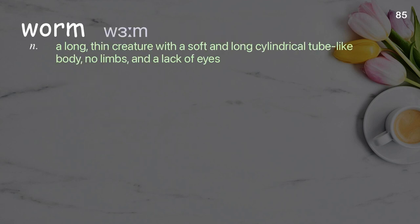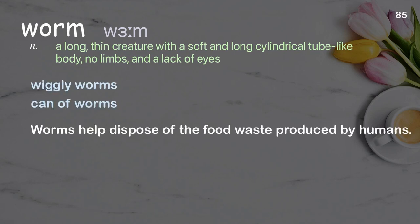Worm. A long, thin creature with a soft and long cylindrical tube-like body, no limbs, and a lack of eyes. Examples: wiggly worms, can of worms. Sentence: Worms help dispose of the food waste produced by humans.